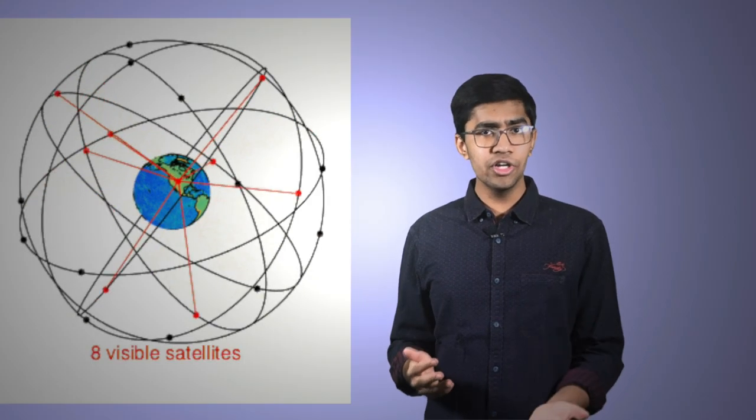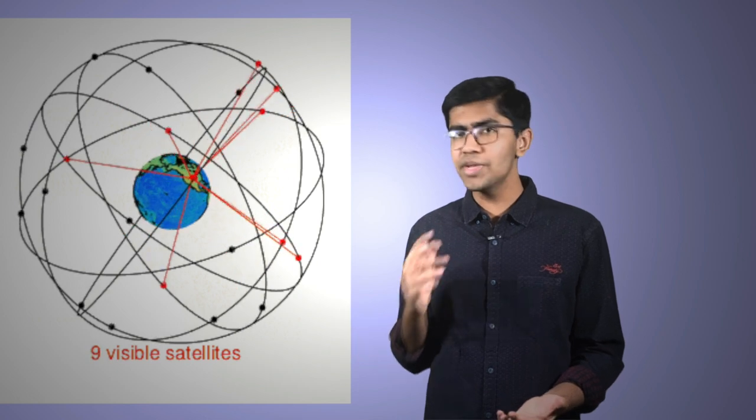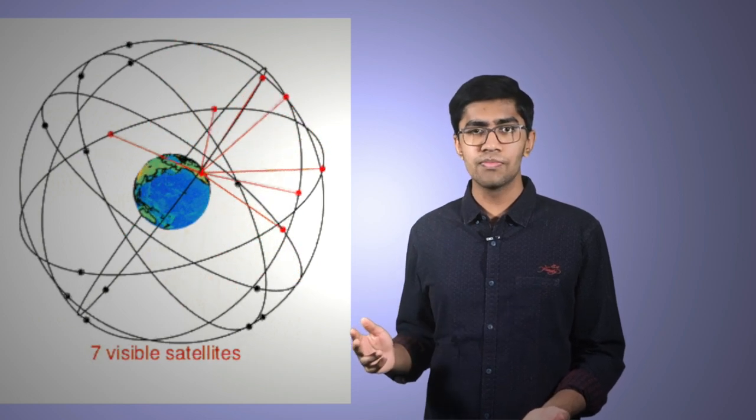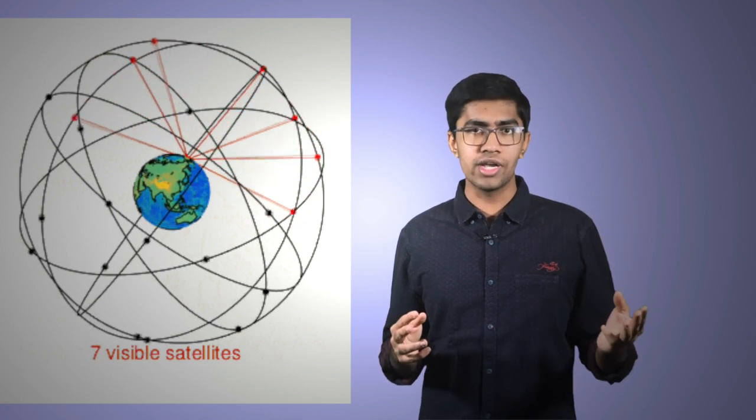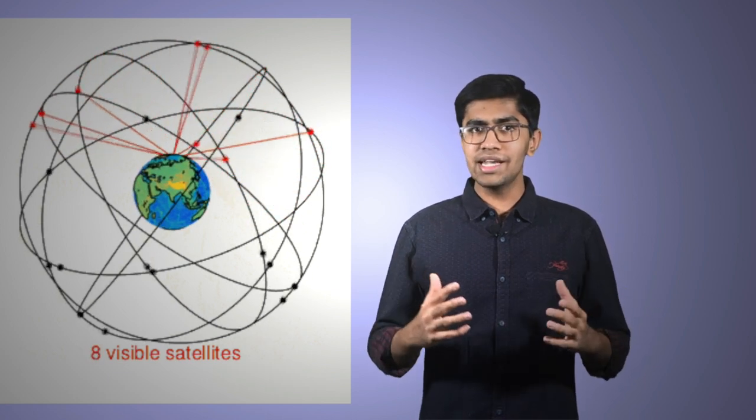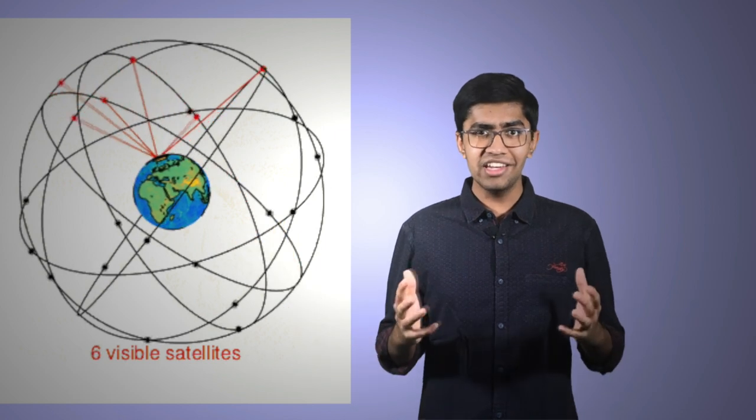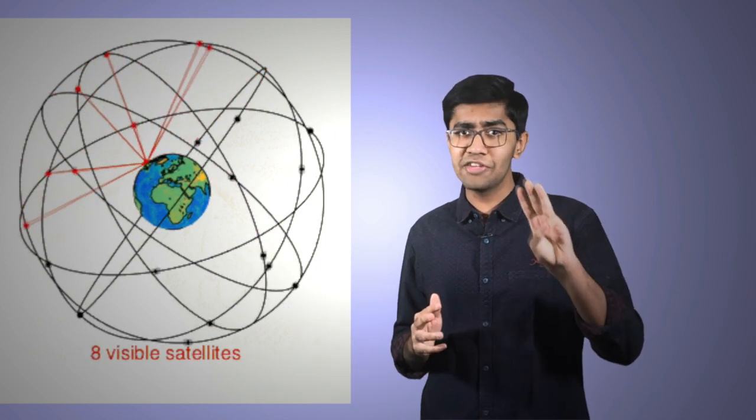The satellites orbit at an altitude of approximately 21,000 kilometers. To get to know your location, you need at least three satellites within radio contact. 24 satellites orbiting the Earth will guarantee that you have those three satellites available to you no matter where you are.